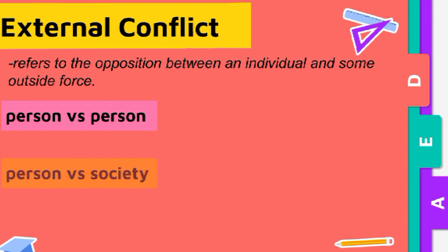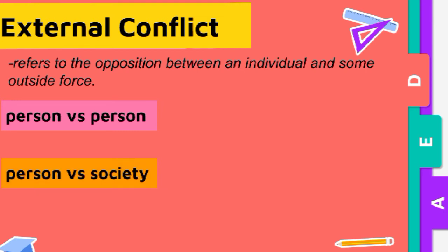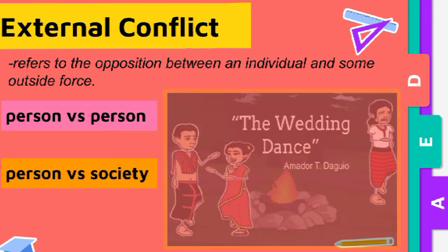Another type is person vs. society. In the story 'The Wedding Dance,' Awiyao and Lumnay are separated because they must follow their tribe's custom.